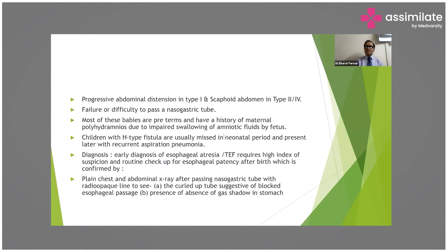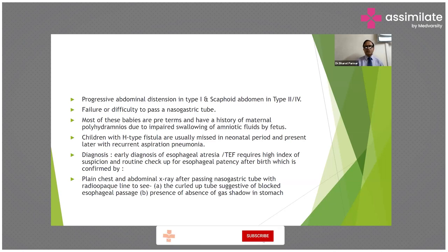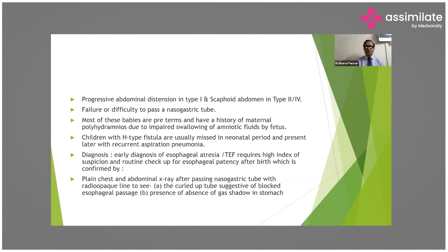Progressive abdominal distension is seen in type 1 and scaphoid abdomen in types 2 and 4. There is failure or difficulty to pass a nasogastric tube. Most of these babies are preterm and have a history of maternal polyhydramnios due to impaired swallowing of amniotic fluid by the fetus.